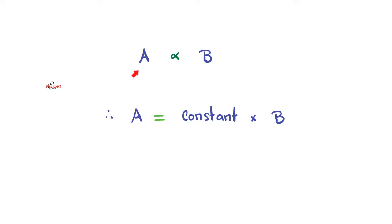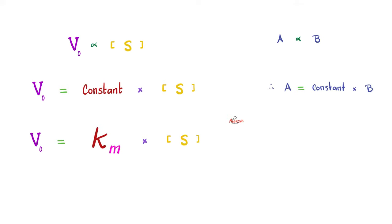Here is a math fact. If A is directly proportional to B, therefore A equals constant times B. We have talked before about the fact that when you increase the number of substrate, the initial velocity or initial rate of the reaction goes up. Therefore, I can remove this and put constant times, and change this into equal.